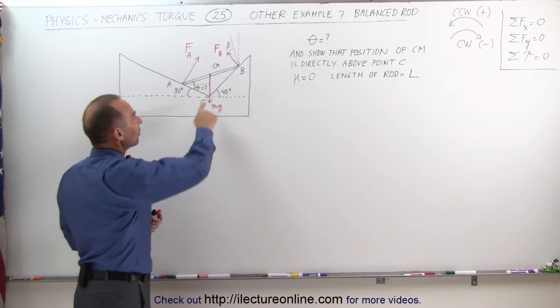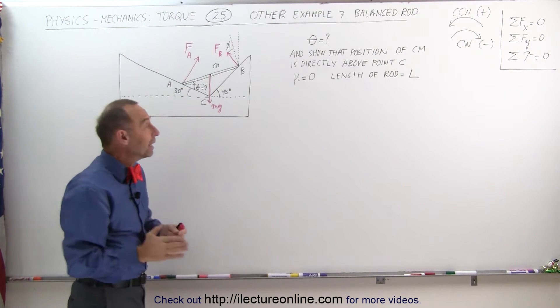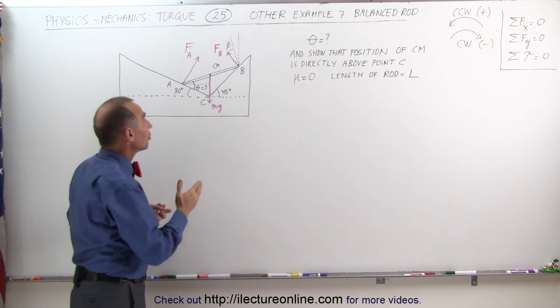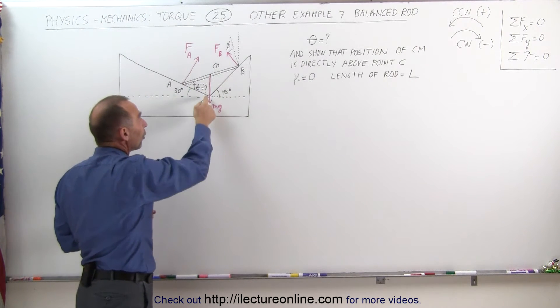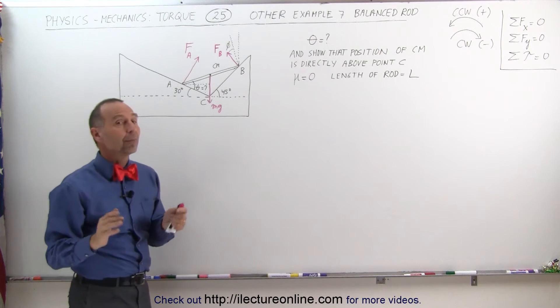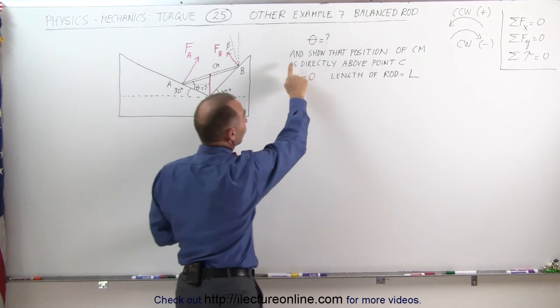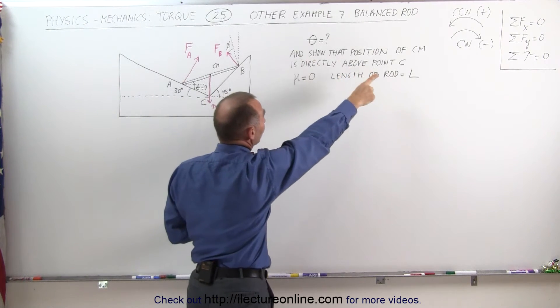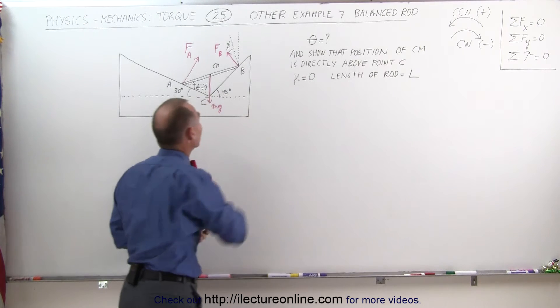The center of mass is right here in the middle of the rod, and supposedly in this situation, the center of mass will be directly over the bottom point right there. That's what we're supposed to show here — show that the position of the center of mass is directly above point C.